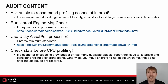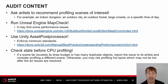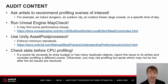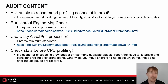Audit content. Ask artists to recommend scenes of interest for profiling — for example, an indoor dungeon with heavy occlusion, an outdoor city, an outdoor forest with alpha transparency, large crowds, or a specific time of day. Unreal Engine developers may find some performance issues simply by running map check, especially for issues related to actor shadows. Unity developers may enforce minimum standards using the asset post processor. Check stats before CPU profiling. If a scene far exceeds its draw budget or has many duplicate objects, especially duplicate physics objects, report the issue to its artists and consider profiling a different scene.